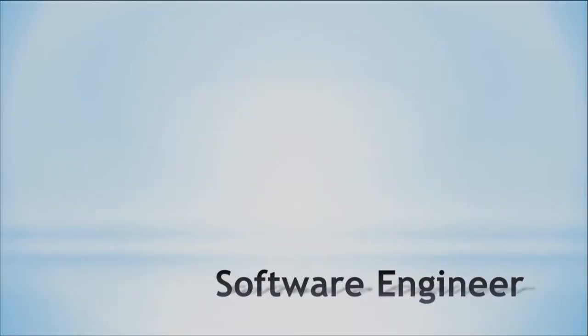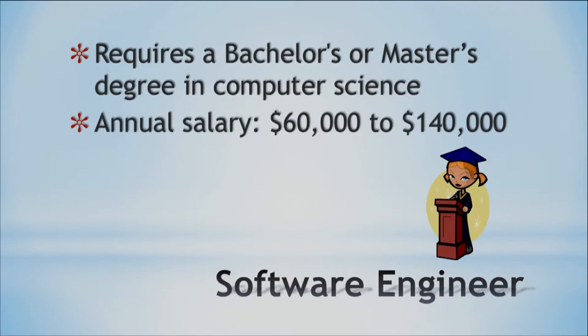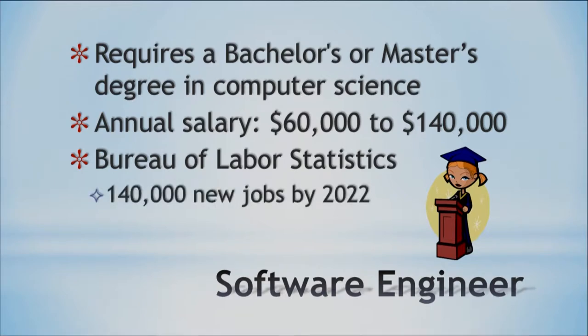A little bit more on software engineering: usually you need not just an associate's but a bachelor's or a master's degree. Most of my friends who have master's degrees got pretty good software engineering jobs with decent salaries — $60,000 to $140,000, according to the Bureau of Labor Statistics. And apparently we have plenty of jobs in the future; it should be a career that's around for a while. The job market for software engineering is increasing, which is a good thing if you're looking for work in the field.